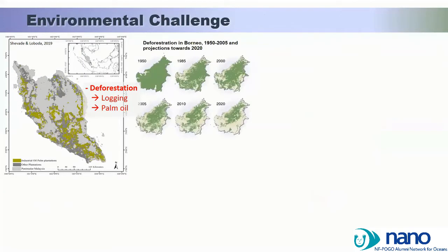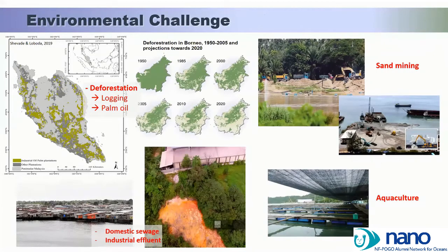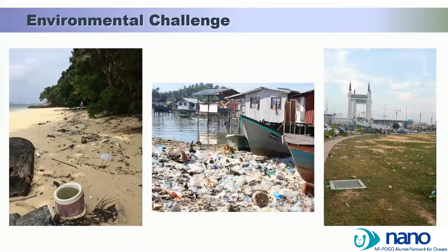Unfortunately, we have some environmental challenges, with one of the main ones being deforestation, which gives way for palm oil plantations. Other environmental challenges include illegal sand mining, effluents or waste coming from industry as well as aquaculture areas. And of course, plastic waste. These photos show a quite common view in Malaysia — plastic waste on the beach, plastic waste in traditional housing areas, as well as plastic waste next to rivers.